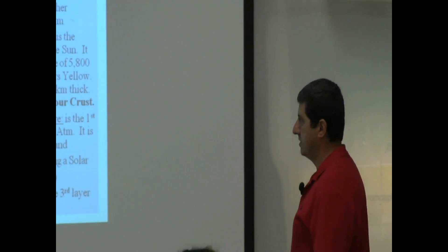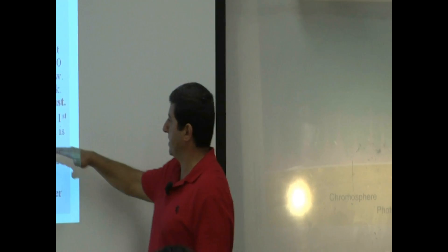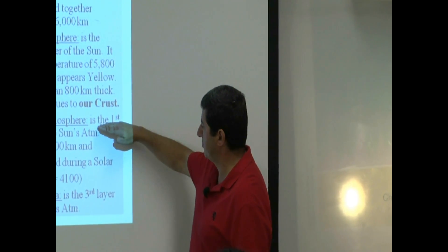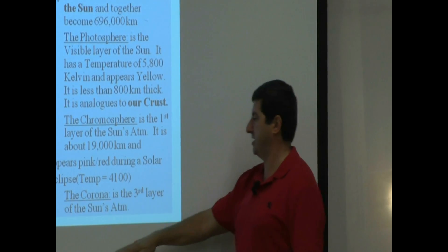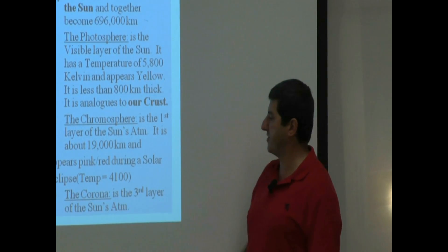Then you got the corona. So notice I'm jumping here. The first layer of the sun's atmosphere is the chromosphere. Then I jump to the third layer. Then we're going to come back to the second layer. The corona is the third layer of the sun's atmosphere.